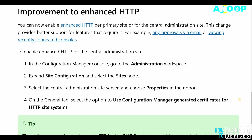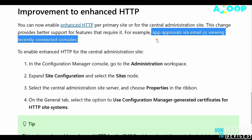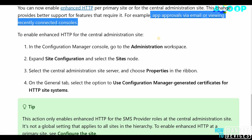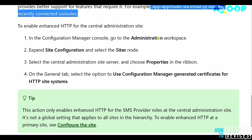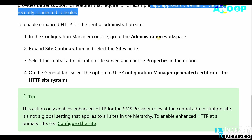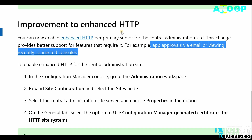Enhanced HTTP can be used in some scenarios of CMG and co-management. In the examples, it's mentioned that it is helpful for app approval via email and viewing recently connected consoles. How to configure Enhanced HTTP is also mentioned, and importantly you can enable it for a particular primary site while your other primary sites remain normal.